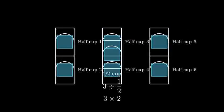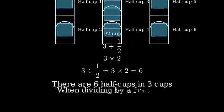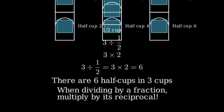So we can see that three cups can be divided into six half cups. Therefore, three divided by one half equals six. This shows us why when we divide by a fraction, we multiply by its reciprocal.